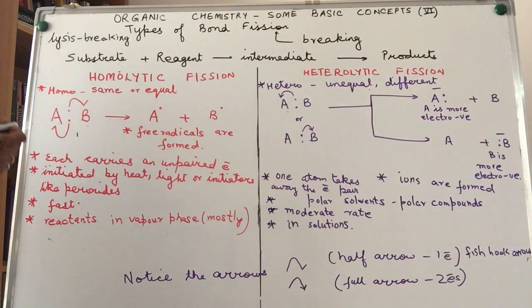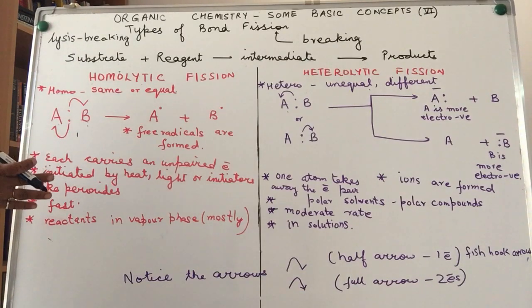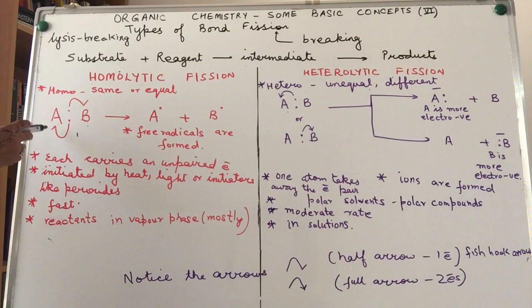We have homolytic fission. That means they have come together to form a bond. When they part ways also, each one takes away its electron. That is homolysis or homolytic fission.